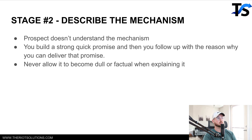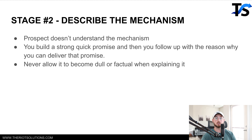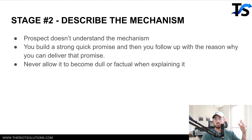Stage two is where the prospect does not understand the mechanism. You build a strong, quick promise, then follow up with the reason why you can deliver that promise. For example: 'I'm going to help you build Facebook ads that convert because I leverage psychology-based creatives. We do desire, market awareness, market sophistication — understanding all this allows us to position the ad — then we go through identification, belief, mechanization, desire, all that to make sure we put the right content in the ad after we have it positioned correctly.' That's describing the mechanism, and you have to assume the prospect has never heard your mechanism yet.